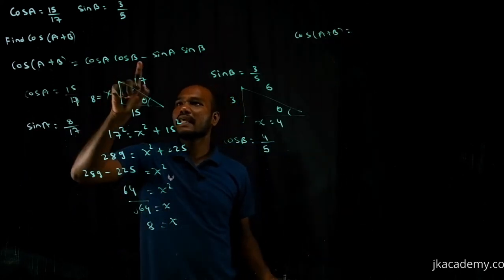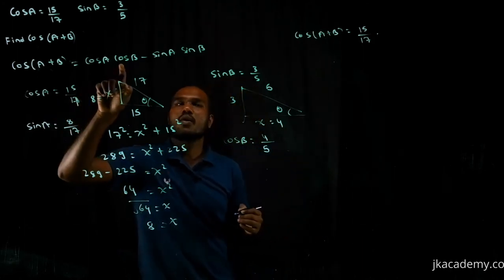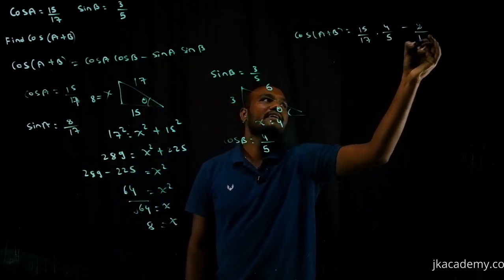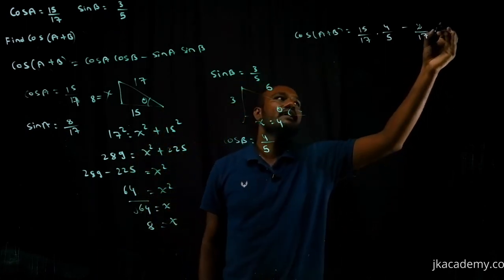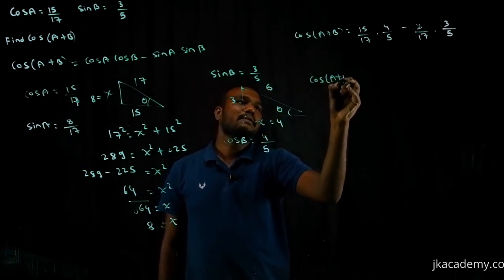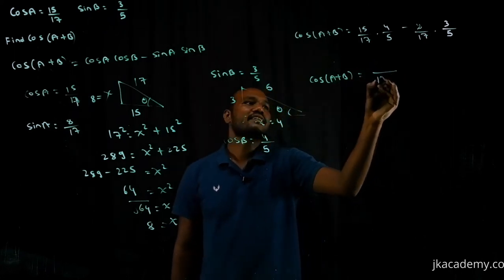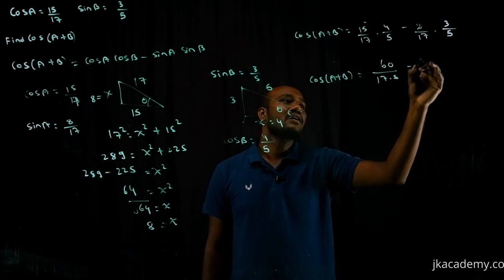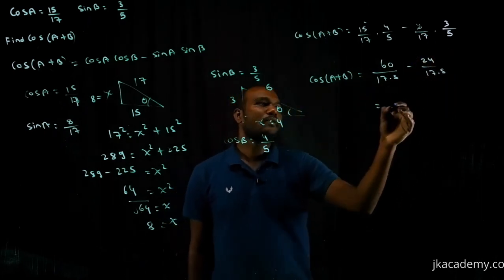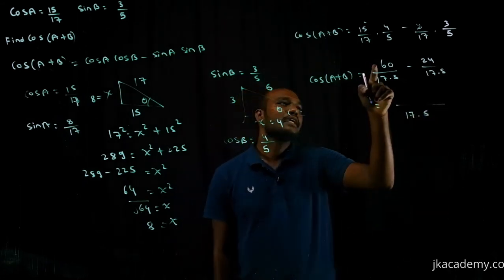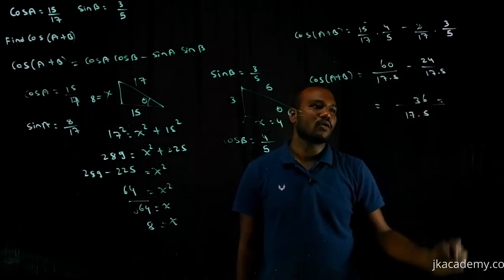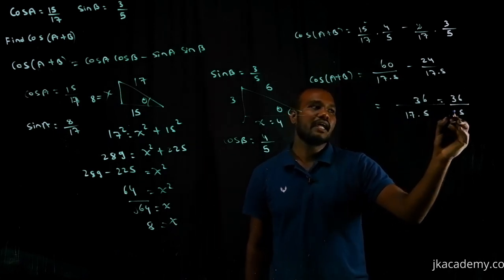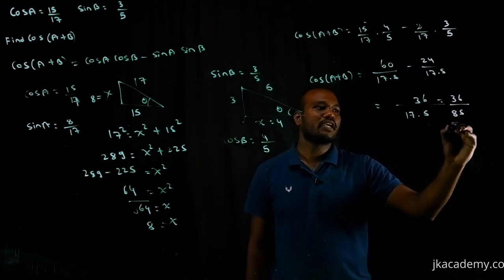So cos(a + b) = cos a · cos b − sin a · sin b = (15/17)(4/5) − (8/17)(3/5). The denominator is 17 × 5 = 85. Numerator: 15 × 4 = 60, and 8 × 3 = 24. So 60 − 24 = 36. Therefore cos(a + b) = 36/85.